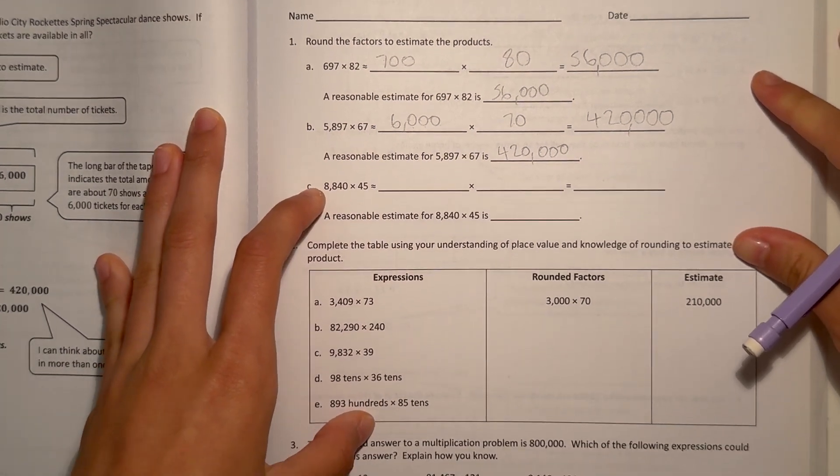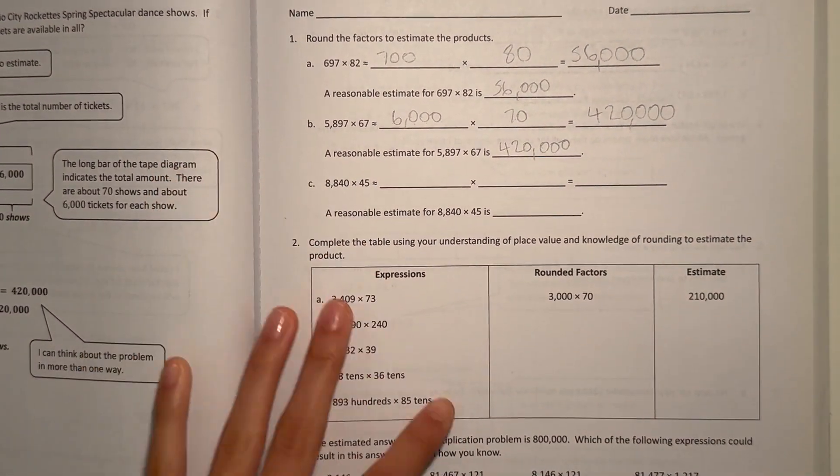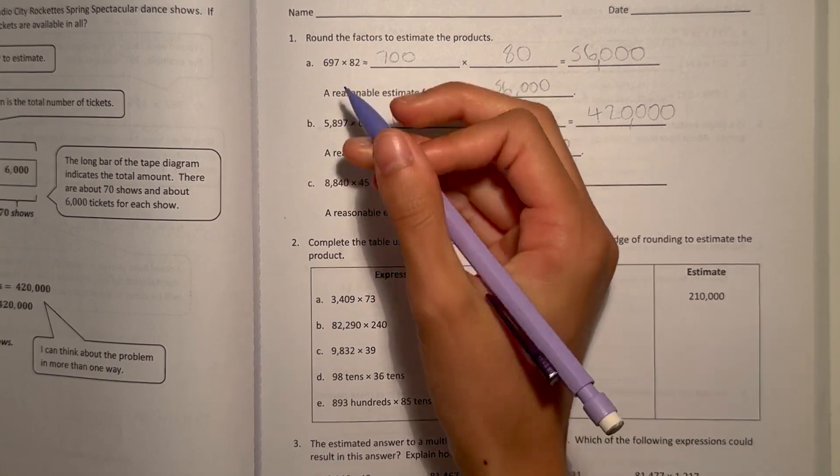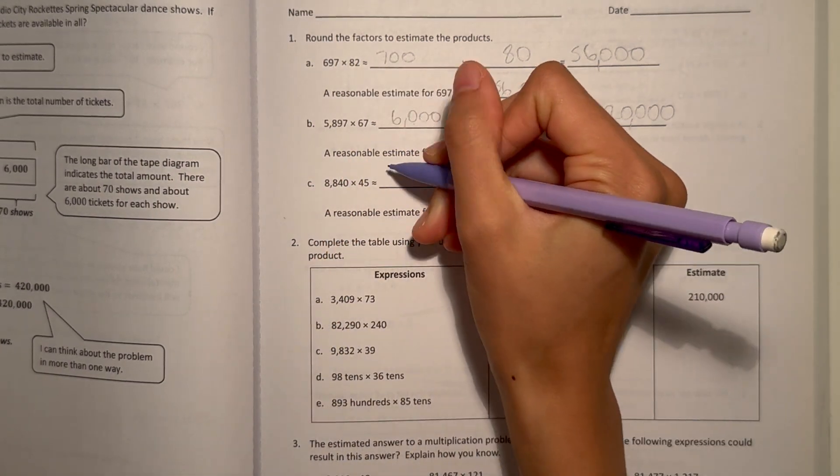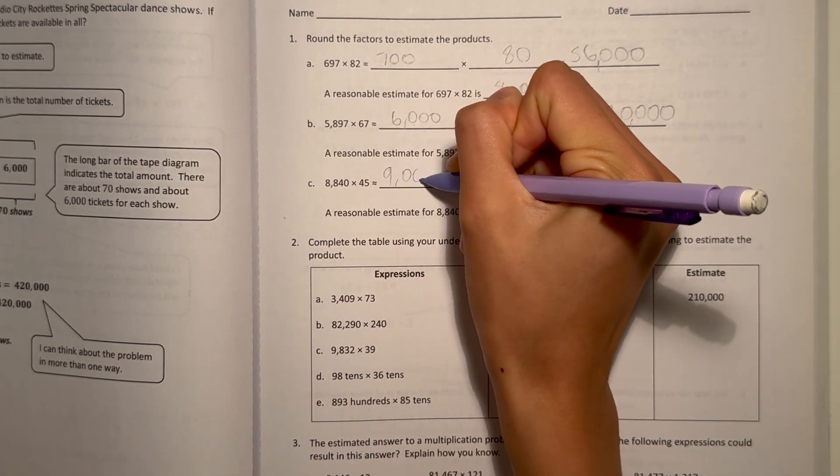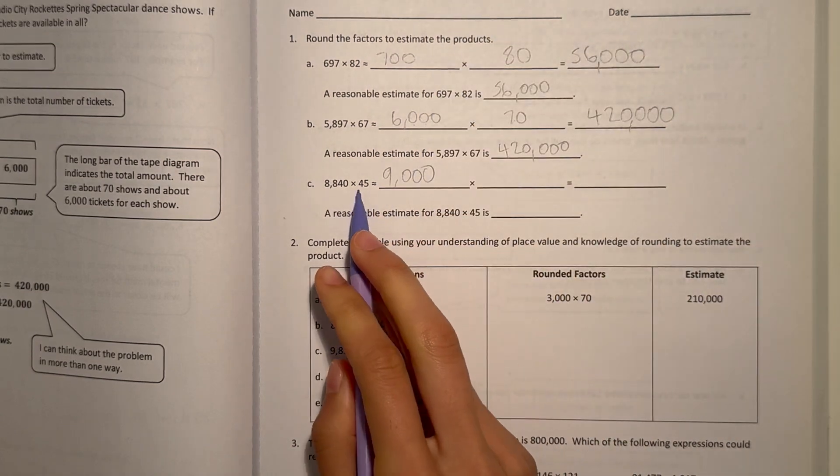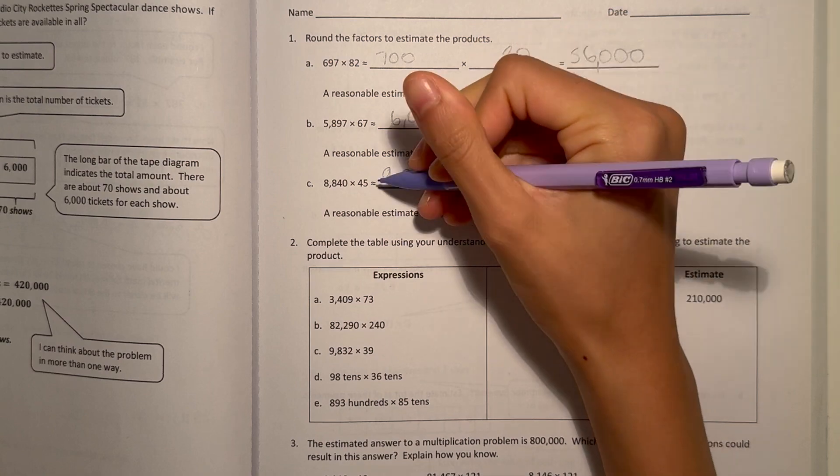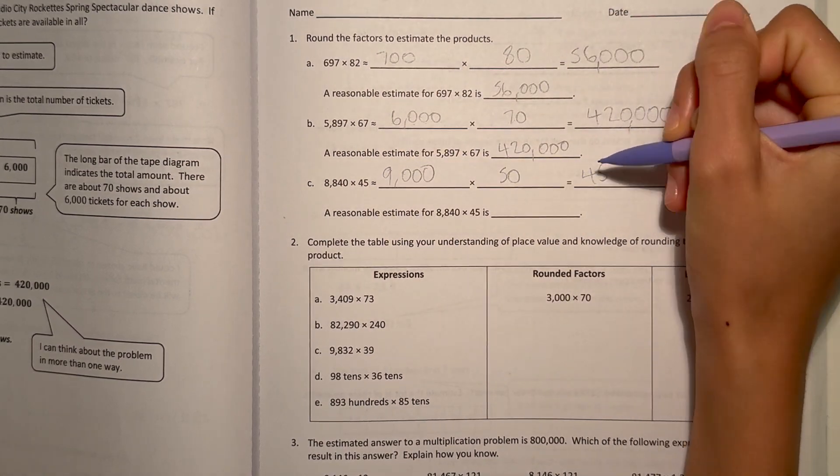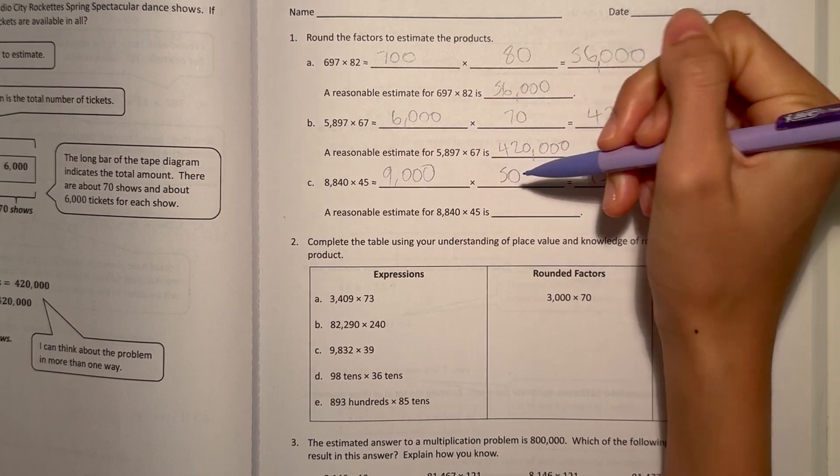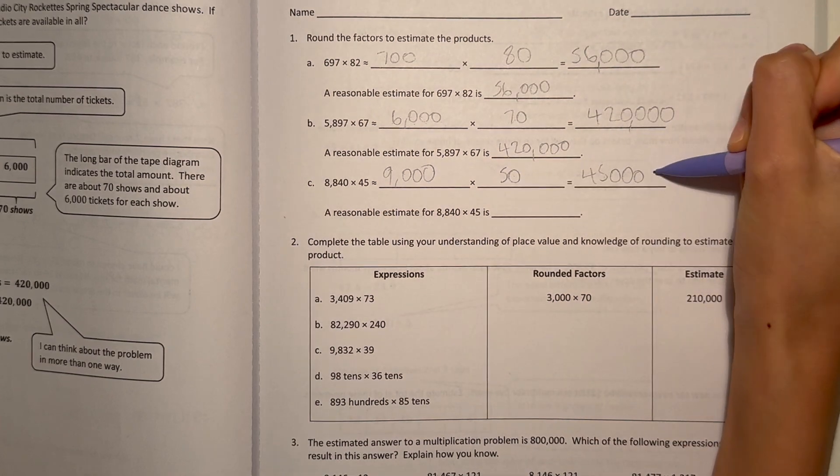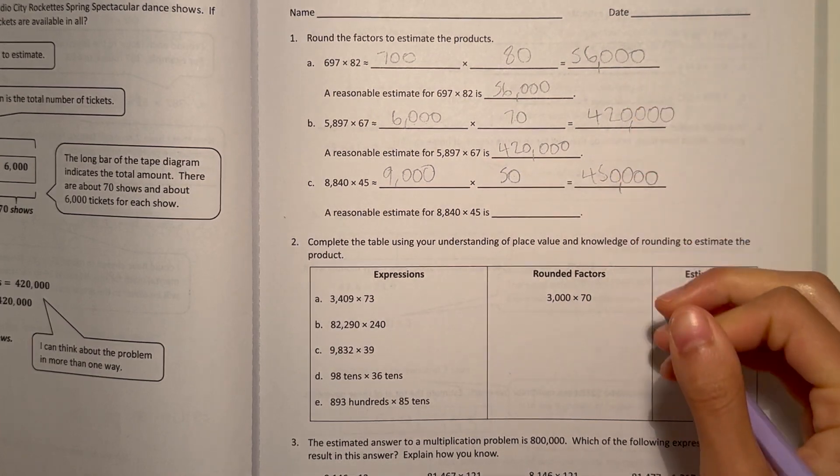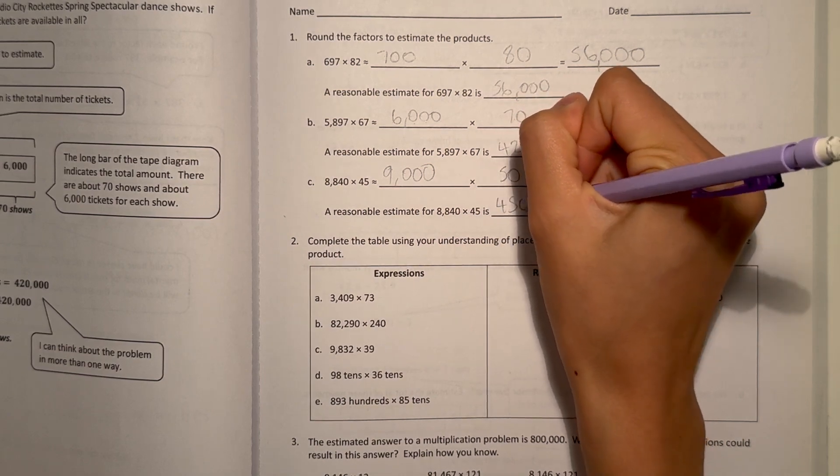And C, 8,840 × 45. I'm rounding to the nearest thousands, and that would round to 9,000, times to the nearest tens, 45, that would round up to 50. 9 × 5 is 45, and there's 1, 2, 3, 4 zeros. So then a reasonable estimate would be 450,000.